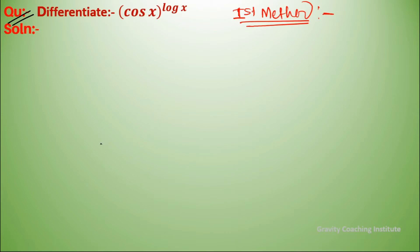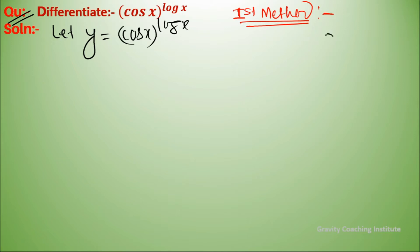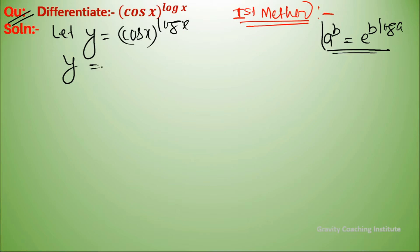Question: differentiate cos x to the power log x. So let y equal to cos x to the power log x. Using the formula a to the power b equals e to the power b log a, we rewrite this as e to the power log x times log cos x.